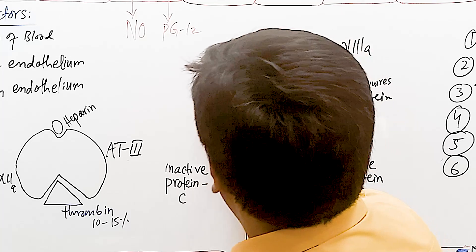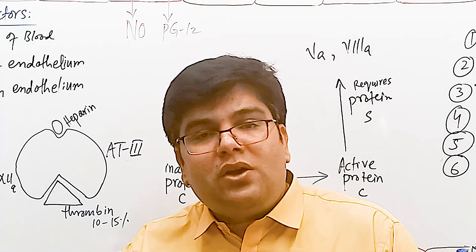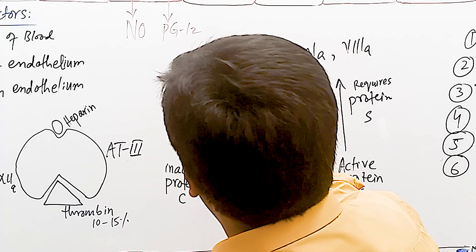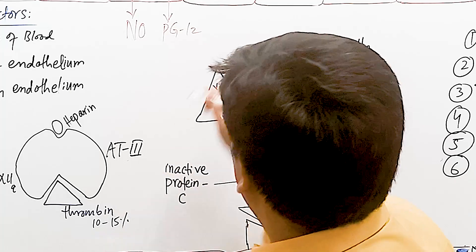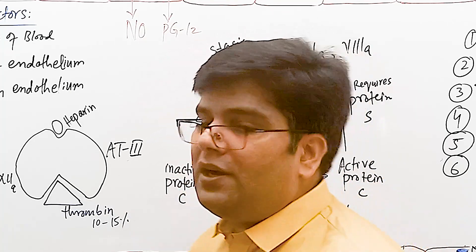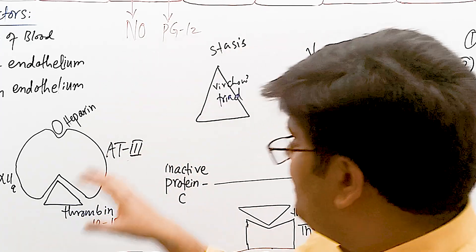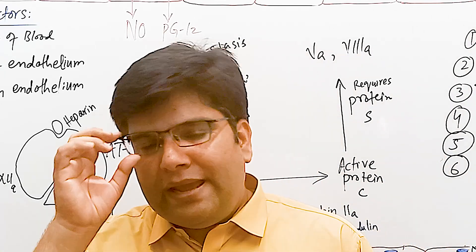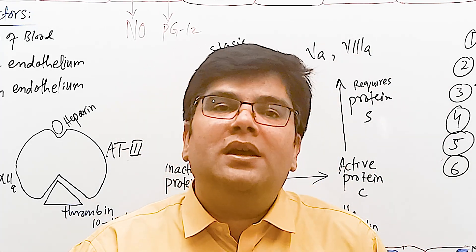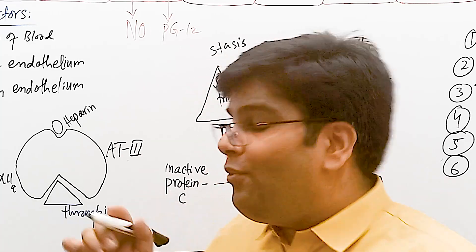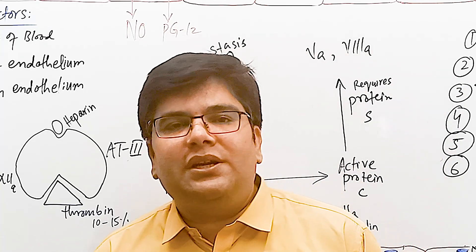Finally, Virchow's triad of thrombosis explains how decreasing anticoagulant factors increases clotting risk. There are three important factors: first, stasis of blood or altered blood flow — for example, a bedridden patient has slower blood flow, making it more likely for platelets and clotting factors to contact the endothelial surface, become activated, and start the clotting cascade.